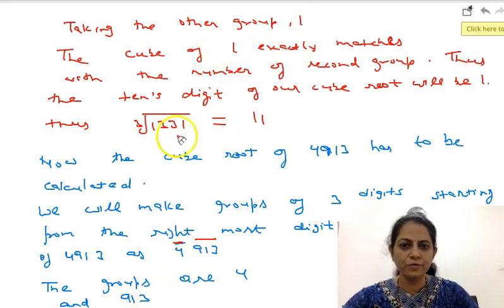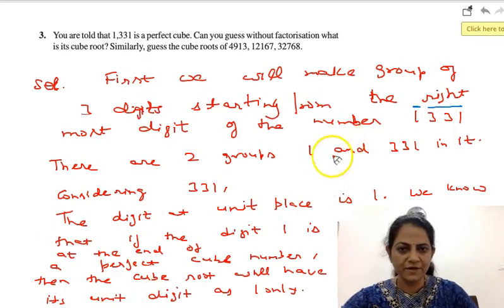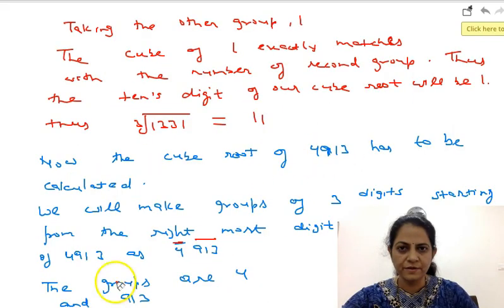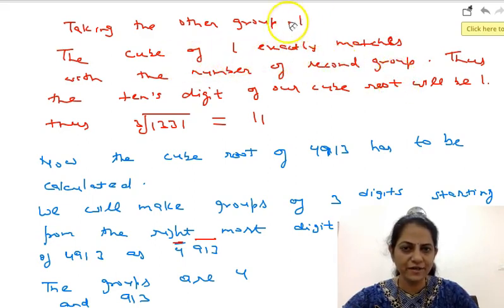Taking the other group, which is 1, the cube of 1 exactly matches with the number of the second group. We know that the cube of 1 is 1 and that is actually our number in the second group.